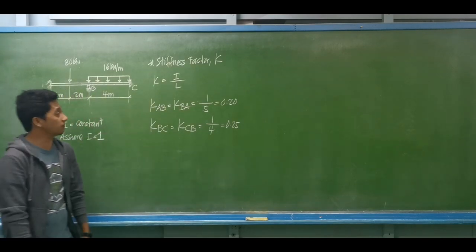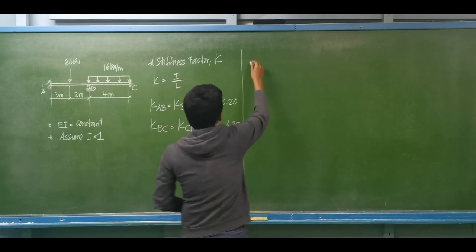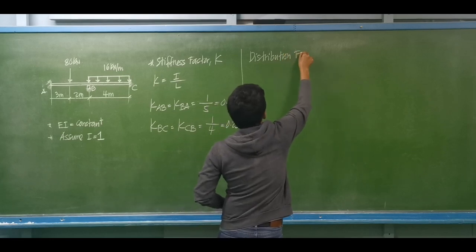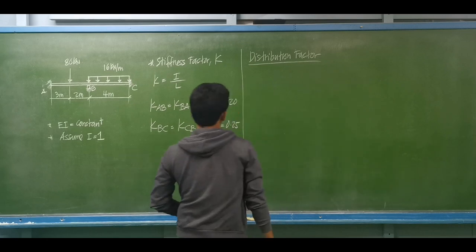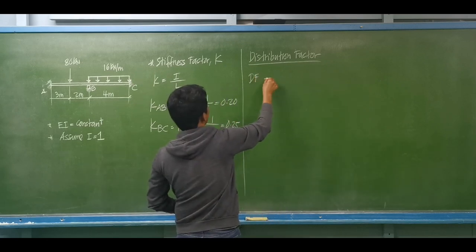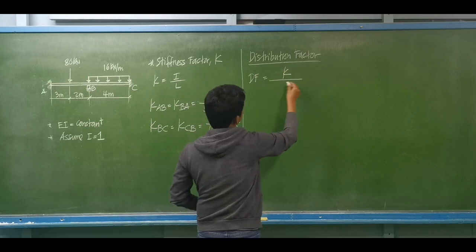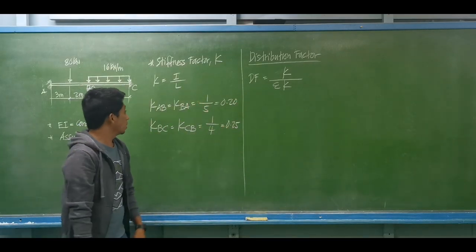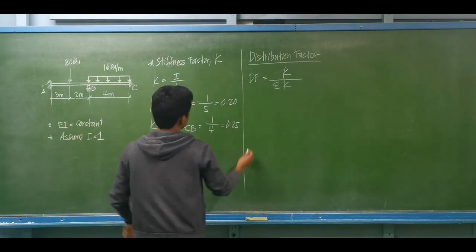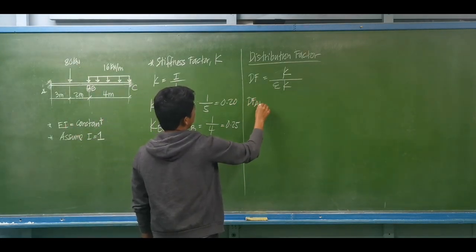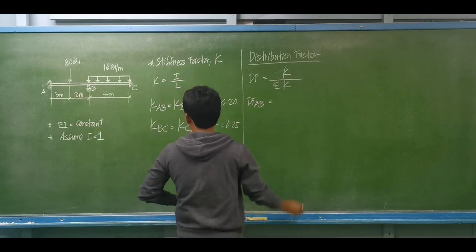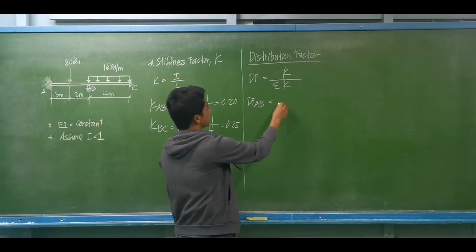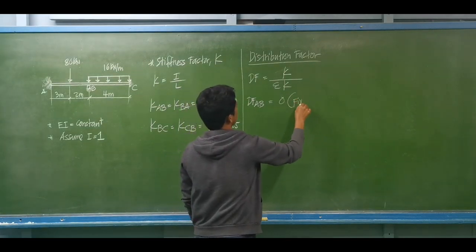After computing the stiffness factors, we compute the distribution factors. The distribution factor is equal to the stiffness factor of a given span divided by the summation of the stiffness factors of all spans connected to that joint. At joint A, the distribution factor for a fixed support is designated as 0.